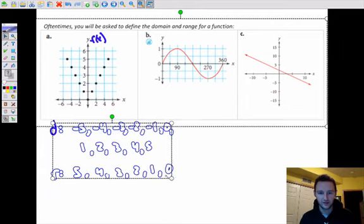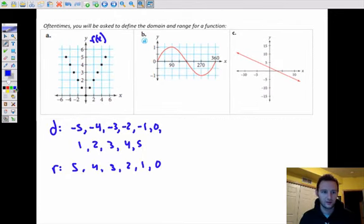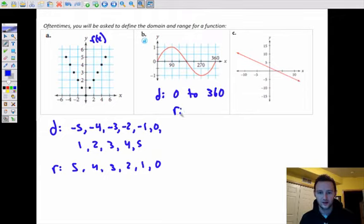The domain and range of this next one over here, it looks like the domain, the x values range from 0 to 360. So we can say 0 to 360. The range looks like our maximum up here is 1. Our minimum down here is negative 1. So we can say negative 1 to 1. And again, I'm including this as all-inclusive. All x values from 0 to 360. All y values or f(x) values from negative 1 to 1. All of those are included because this is a continuous line.